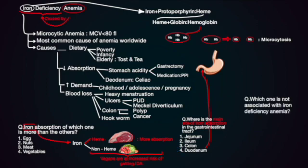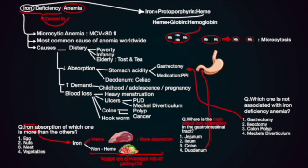Question 3: Which one is NOT associated with iron deficiency anemia? 1. Gastrectomy, 2. Ileectomy, 3. Colon polyp, 4. Meckel's diverticulum. In the stomach, iron is converted to a form that is then easily absorbed in the duodenum, so gastrectomy by reducing stomach acidity can lower iron absorption. Colon polyp and Meckel's diverticulum also give rise to iron deficiency through blood loss. So the correct option is 2. The ileum is the main site of vitamin B12 absorption, and ileectomy affects that vitamin, not iron.